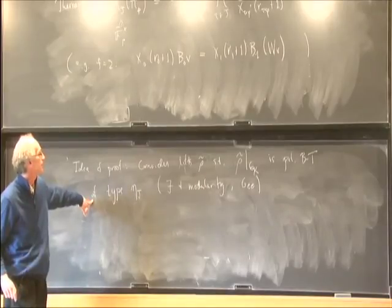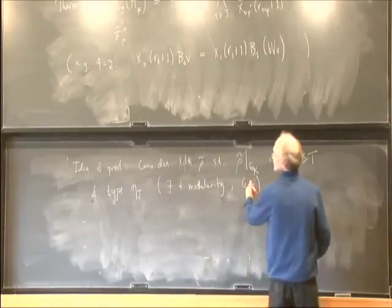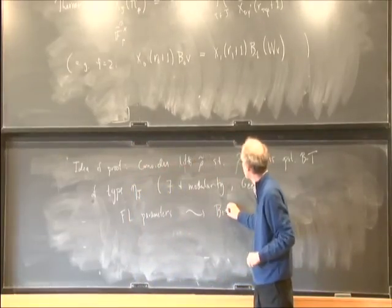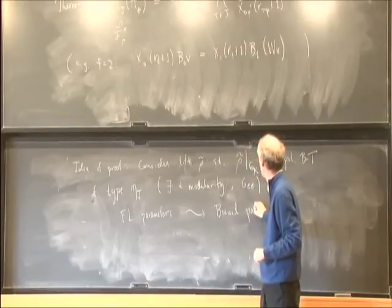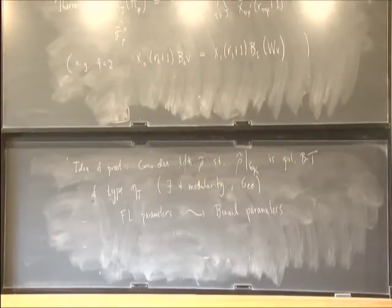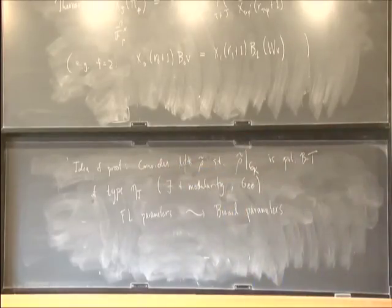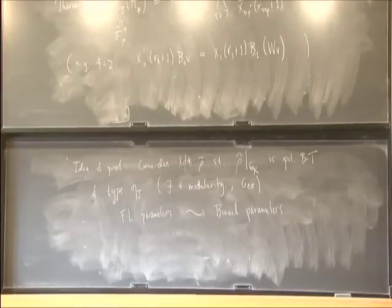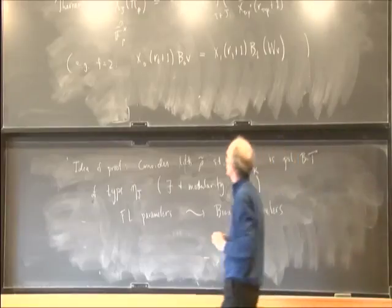From the existence of these lifts, the Fontaine-Laffaille phi parameters can be related to the parameters for the Breuil module associated to the finite flat group scheme, which is the reduction of the p-divisible group. From there you can get constraints on the eigenvalues of phi^f on the Dieudonné module of the p-divisible group, restricted to GL where L is the field over which this is a p-divisible group.